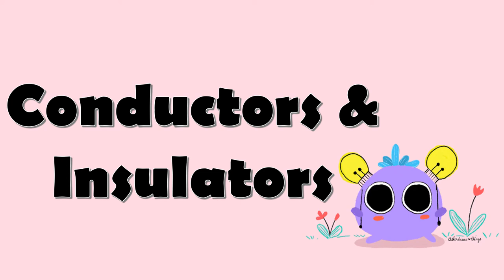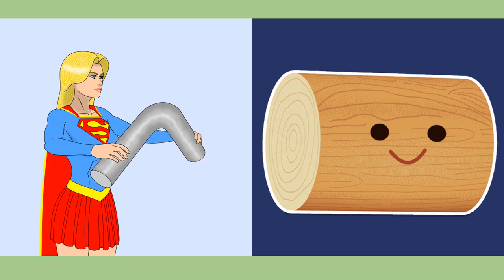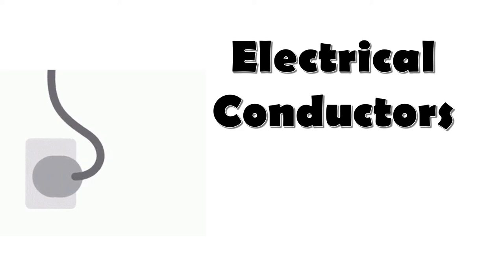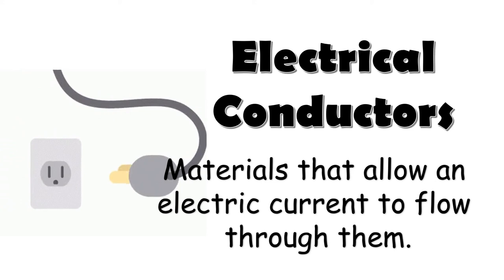Did you enjoy making the DIY with your parents and guardians? Now, let us proceed to conductors and insulators. The different materials around us may or may not allow an electric current to pass through them. Some materials, such as steel, allow an electric current to flow through them. Other materials, such as wood, do not allow an electric current to flow through them. Let us have the difference between electrical conductors and electrical insulators. First, electrical conductors — these materials allow an electric current to flow through them. We say that these materials can conduct electricity.